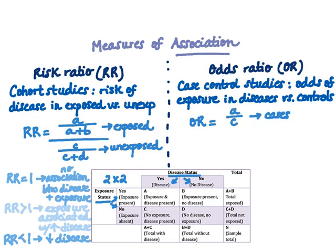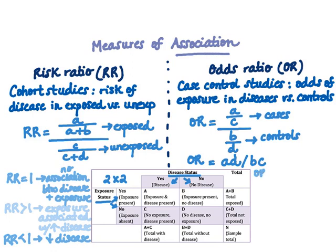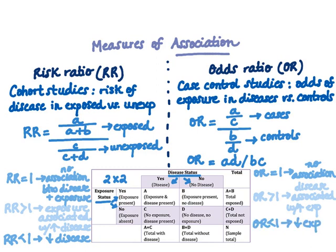Moving to the odds ratio: the OR is represented by cases divided by controls, mathematically A/C divided by B/D, which yields AD divided by BC. If the OR equals 1, there is no association between disease and exposure. If OR is greater than 1, the disease is associated with increased exposure; if less than 1, it's a decreased exposure. Pay attention to the wording here.